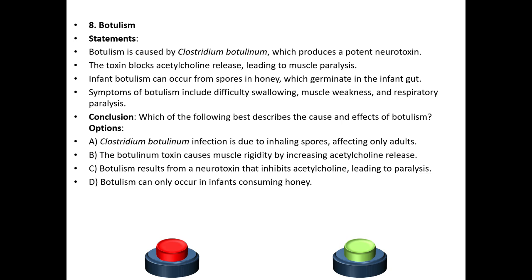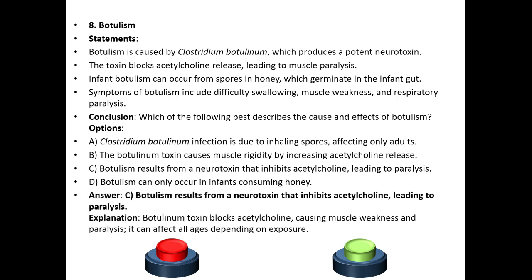Conclusion: Which of the following best describes the cause and effects of botulism? Option A: Clostridium botulinum infection is due to inhaling spores affecting only adults. Option B: The botulinum toxin causes muscle rigidity by increasing acetylcholine release. Option C: Botulism results from a neurotoxin that inhibits acetylcholine leading to paralysis. Option D: Botulism can only occur in infants consuming honey. The answer is C. Explanation: Botulinum toxin blocks acetylcholine causing muscle weakness and paralysis, and it can affect all ages depending on exposure.